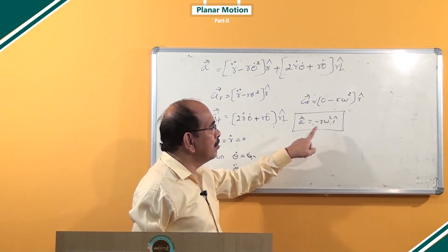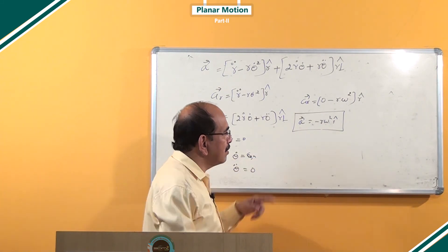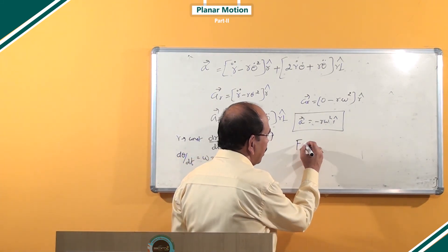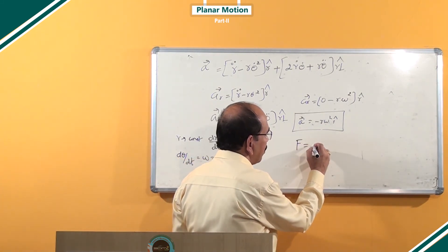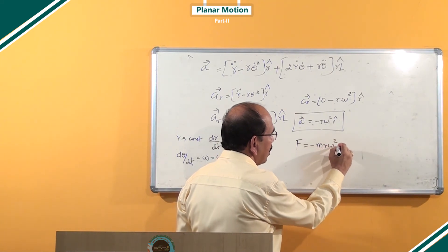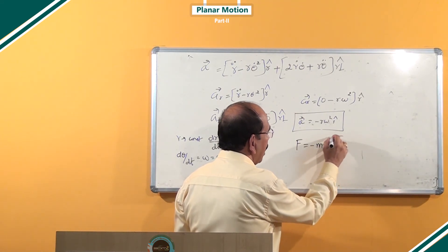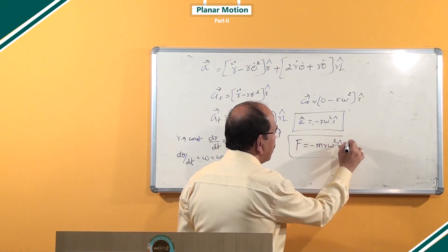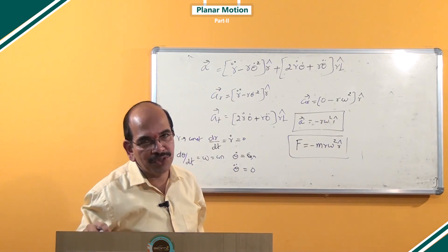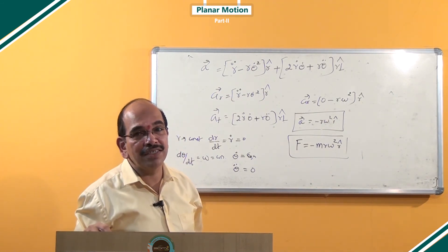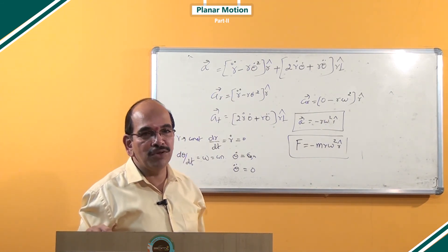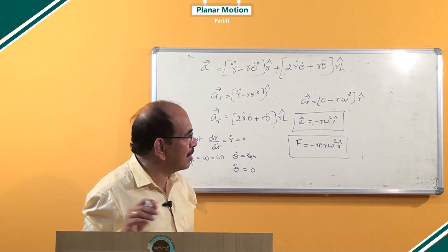If you multiply this by the mass of the particle, the force acting on the particle is given by minus m·r·ω² into r-cap, and we call this the centripetal force. The force is acting towards the center of the circle, therefore it is known as centripetal force.